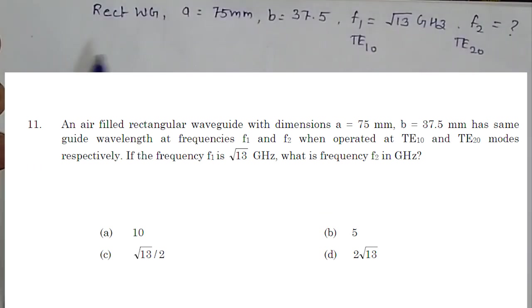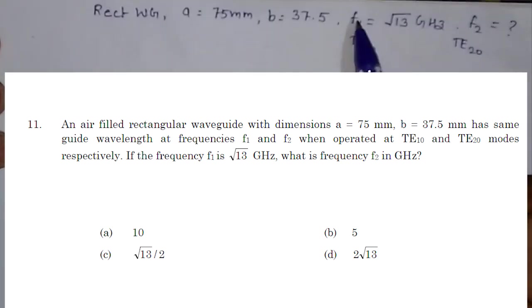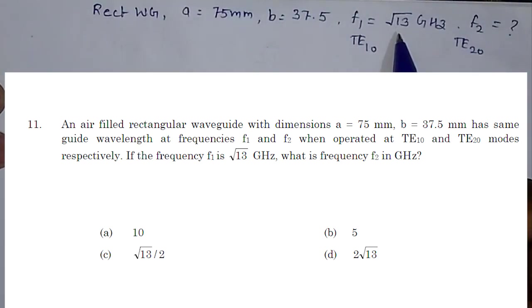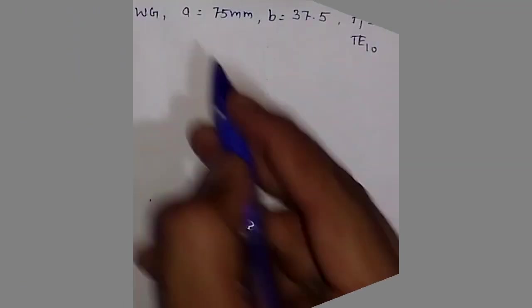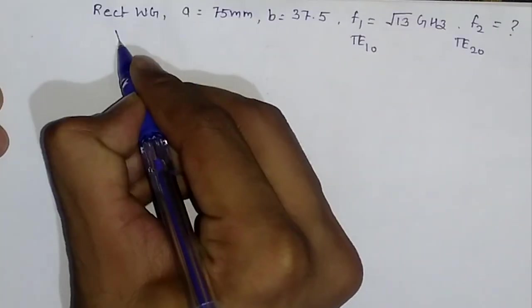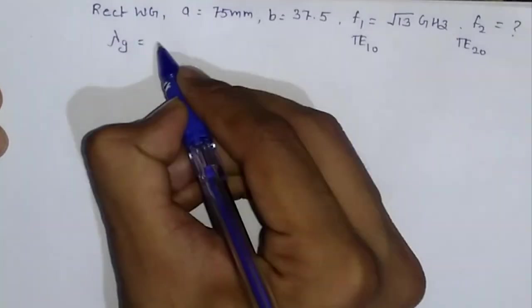In this question, a rectangular waveguide is given with dimensions A and B as 75 and 37.5. Frequency F1 which corresponds to TE10 mode is given as square root of 13 GHz, and he is asking us to find out TE20 mode frequency F2 if the guide wavelength lambda G is equal for both of the cases.